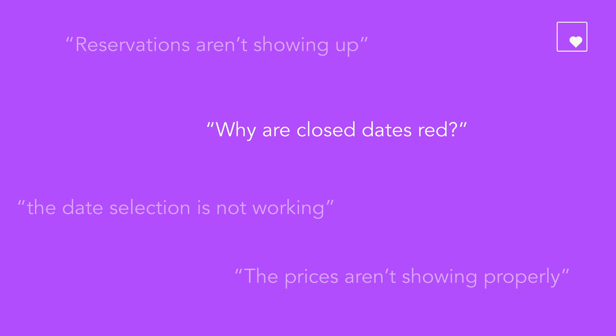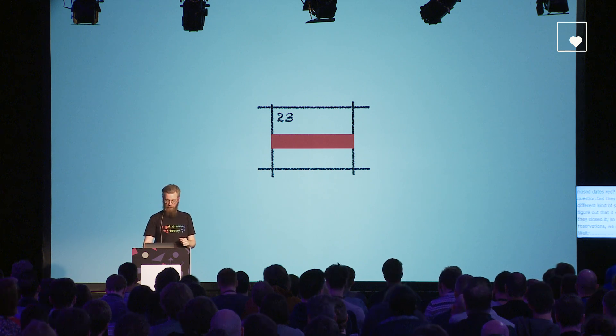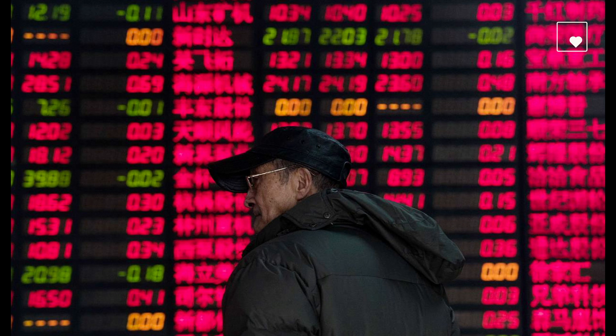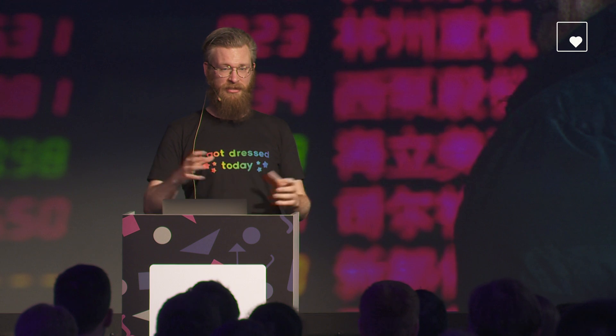Another issue: why are closed dates red? When hosts close dates to not accept reservations, we show a red bar. But in Eastern Asia, red often means something good rather than something bad. So we were showing a closed date - possibly for a funeral - as if it were good. We switched it to gray, which was neutral enough for people. The learning: watch out with colors because you can do things wrong for some countries.